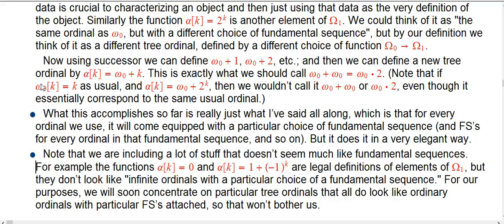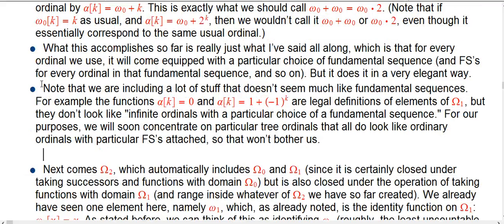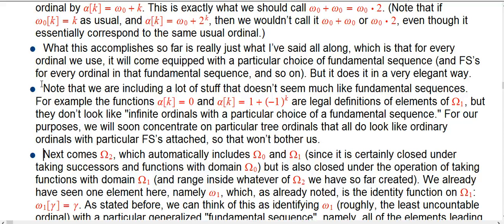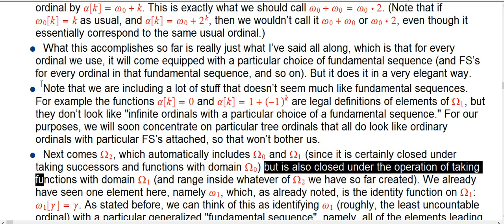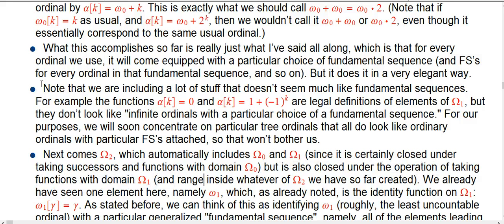For our purposes, we just don't need to worry about them because we're never going to take advantage of that flexibility. Getting to omega_1 doesn't quite cut it — let's think about what omega_2 looks like. Automatically from the definition, it includes omega_0 and omega_1. It has zero, it's closed under taking successors, we're allowed to take functions with domain omega_0 (since 0 < 2), but it's also closed under the more powerful operation of taking functions with domain omega_1, with range inside whatever of omega_2 we've already created — which could be just omega_0 or omega_1, until we create more and more of it.